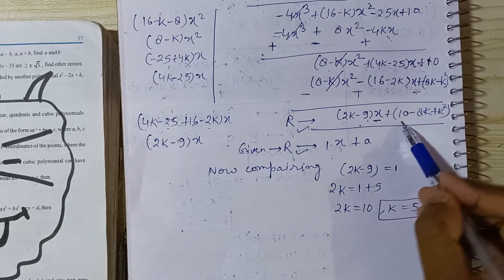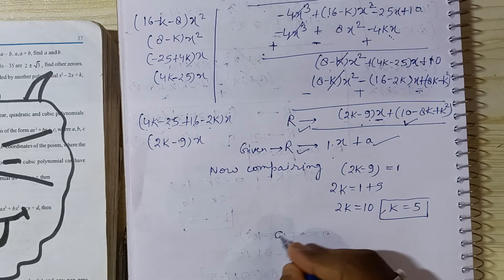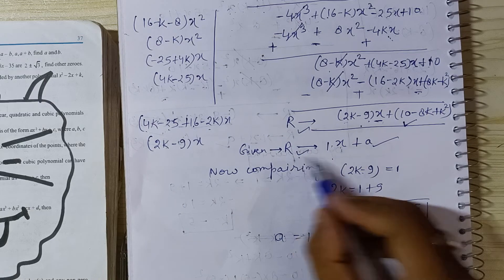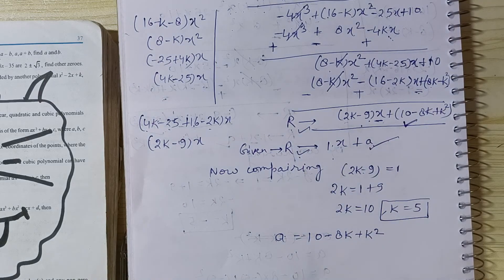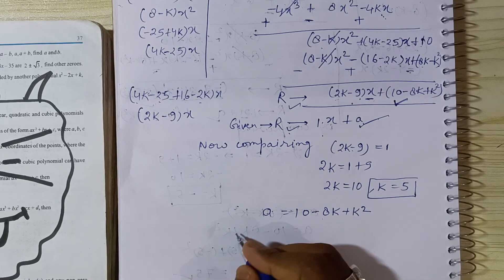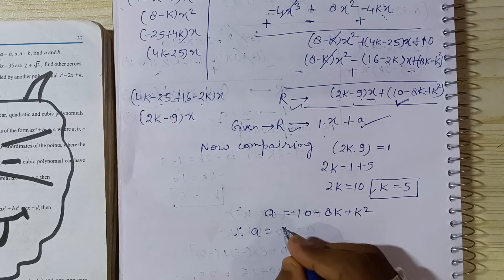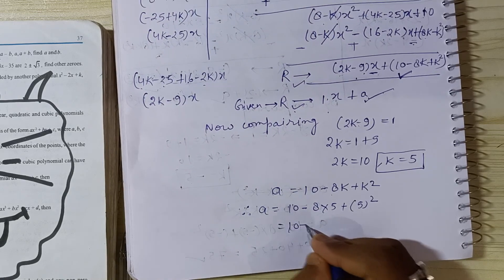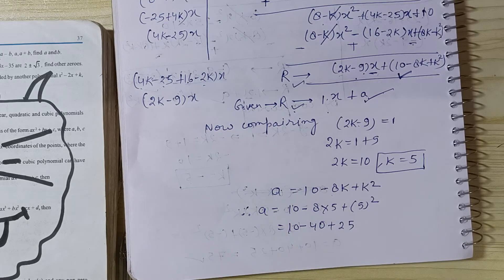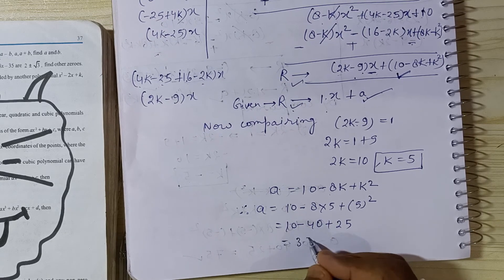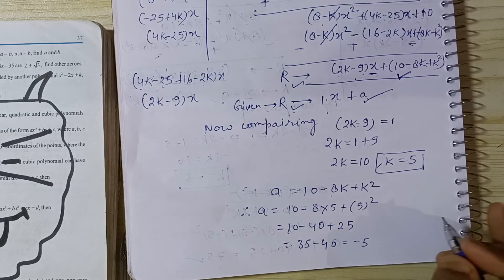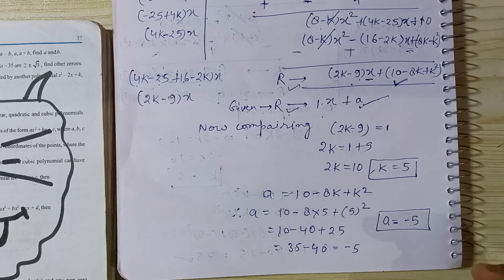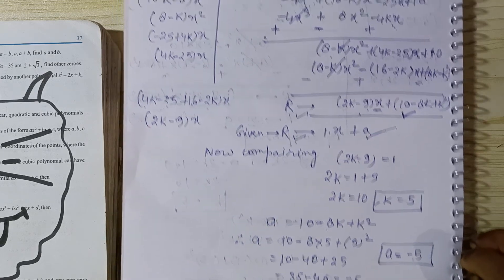Now I will compare the constant term to find the value of a. The value of a equals 10 minus 8k plus k squared. Substituting k equals 5: a equals 10 minus 8 times 5 plus 5 squared, which equals 10 minus 40 plus 25. That gives 35 minus 40, so the value of a is minus 5.